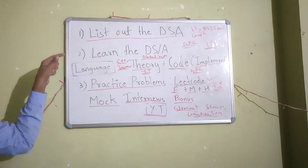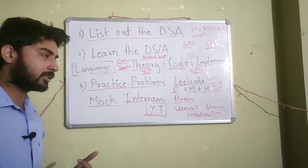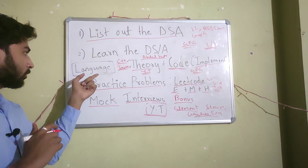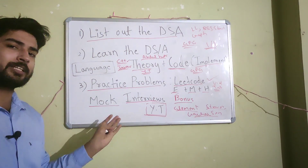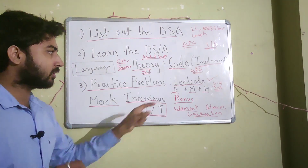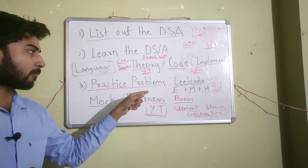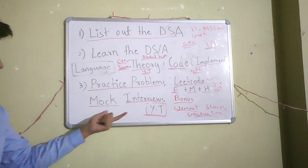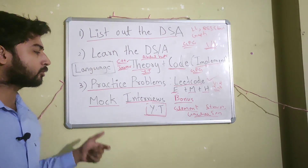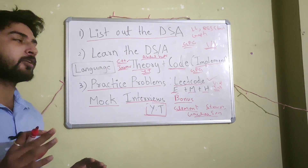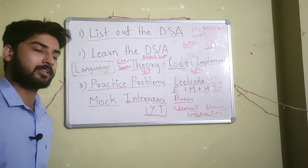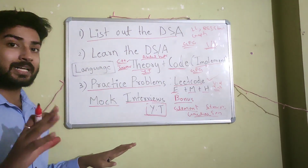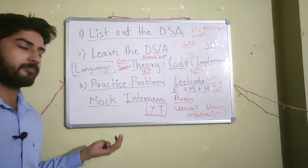To recap: list out all the data structures and algorithms from GeeksforGeeks or the description box, then learn every data structure one by one. First, choose a programming language. Learn the theory from YouTube. Learn how to code it using GeeksforGeeks. Practice problems on LeetCode, and watch video tutorials if you're stuck. Finally, give or watch mock interviews. If you do this, it will be more than enough to be placement-ready, and you will be able to crack any interview — just put in the work and effort with dedication.